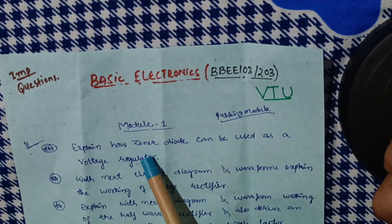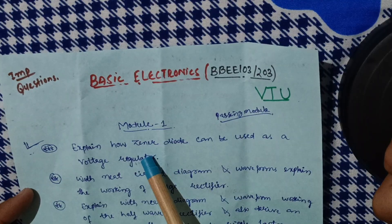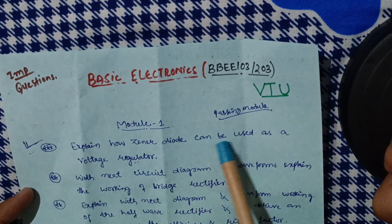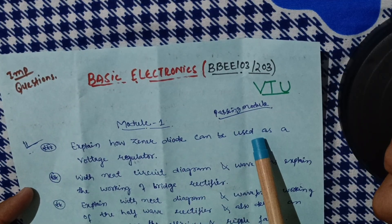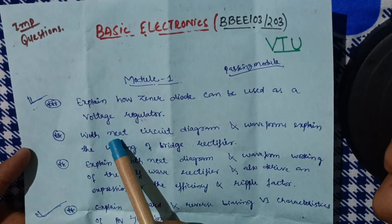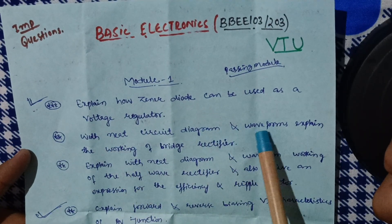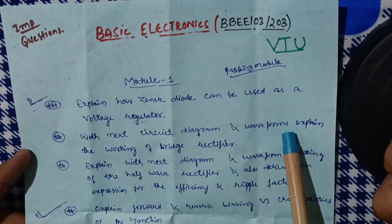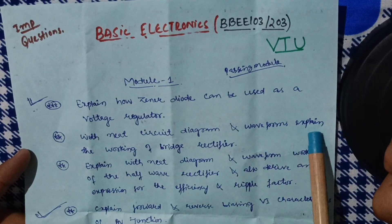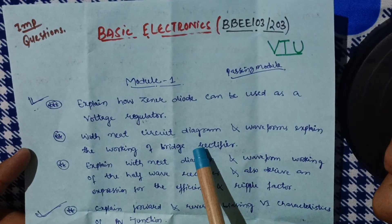As already in the 2018 scheme, it was consistently asked in the examination. So this time they will also ask how Zener diode can be used as a voltage regulator. The next one is: with a neat circuit diagram and waveforms, you have to draw some graphs and waveforms to explain the working of the bridge rectifier.